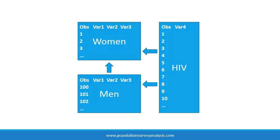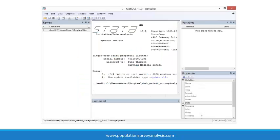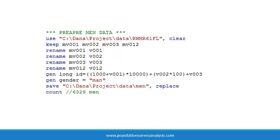Let us look at this scenario using 2010 Rwanda DHS data. Before we append the women and men datasets, we open each original dataset, make some changes to facilitate the append, and then save the modified versions of each file. With the men's individual recode file open, we make the following changes. First, we keep only those variables that we need for this analysis.